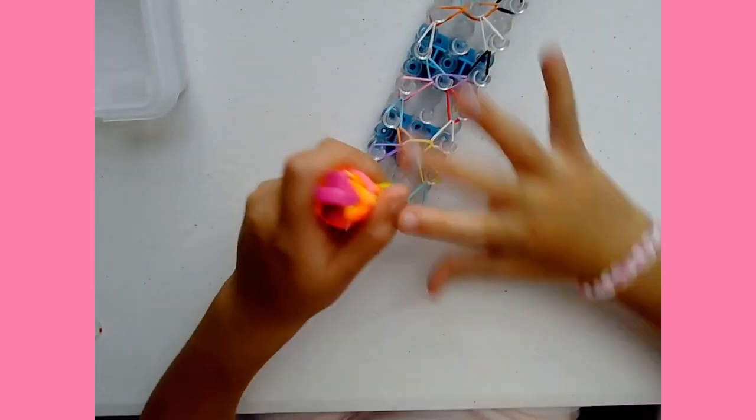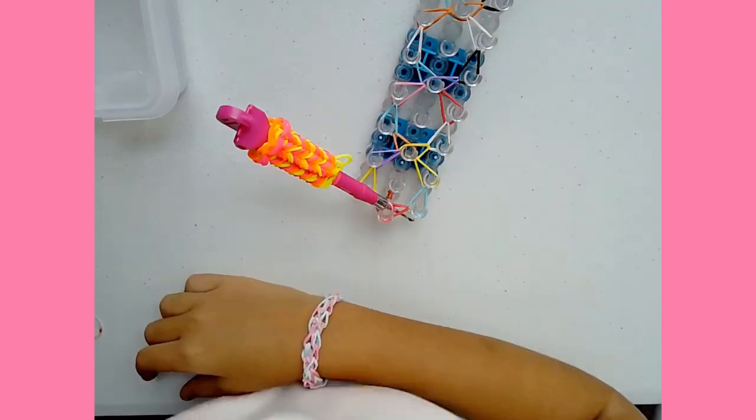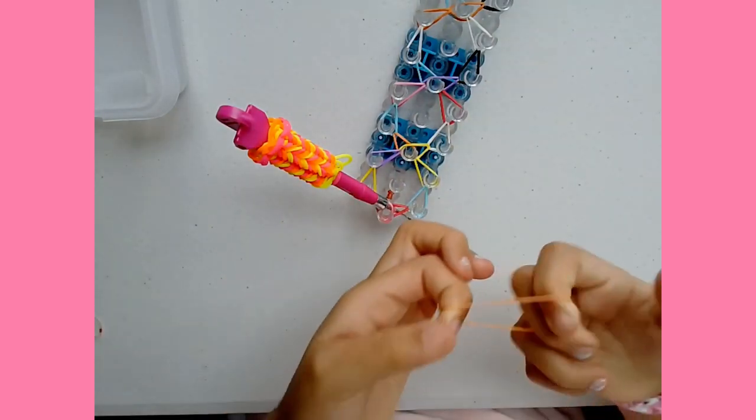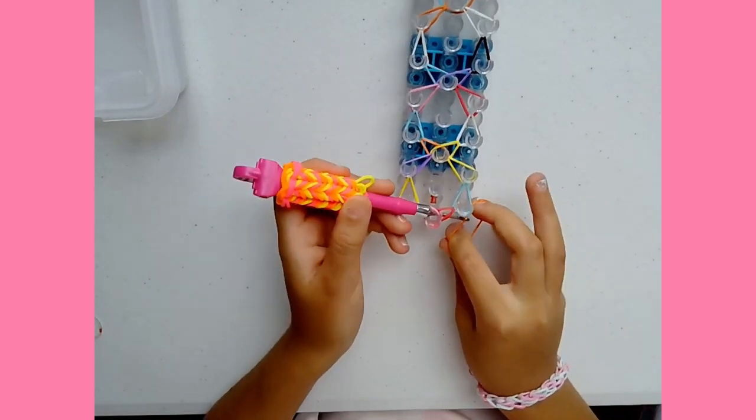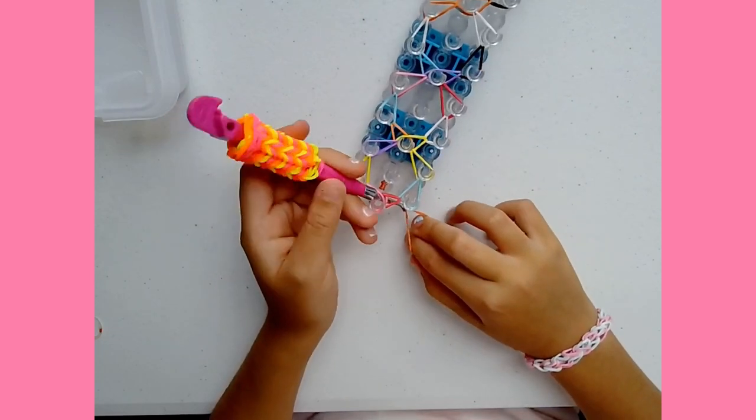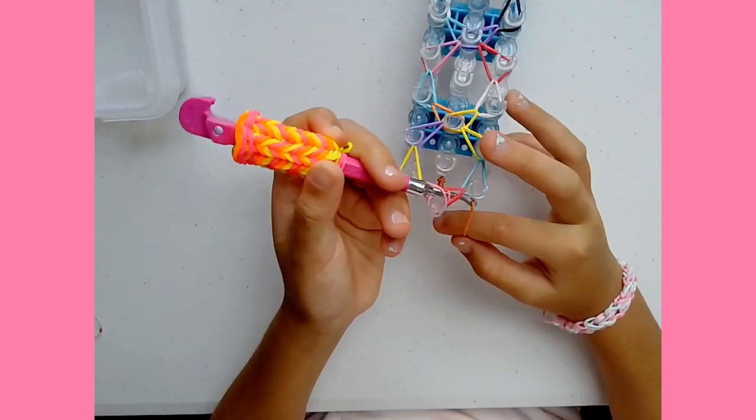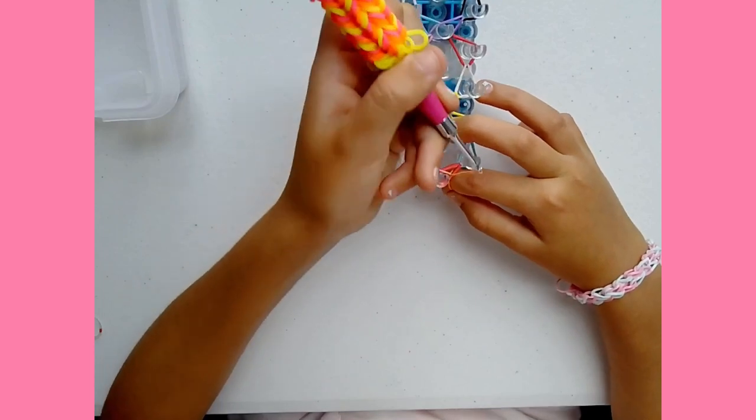So you're going to stick your hook inside everything and you're going to grab your choice of bands. You can grab orange. And I'm going to put it right here on my hook. Make sure that the tip of your hook is facing in that way. It'll be easier. And then just pull it right through.